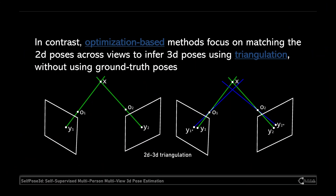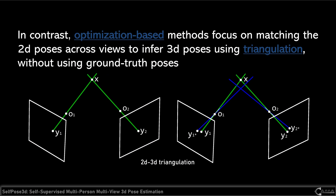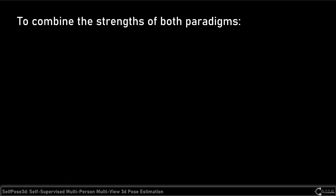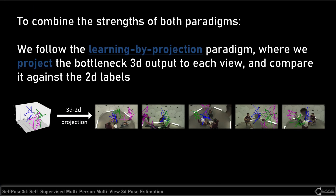In contrast, optimization-based methods focus on matching the 2D poses across views to infer 3D poses using 2D-3D triangulation. They do not rely on ground truth data, but their performance is relatively lower. To combine the advantages of both learning-based and optimization-based paradigms, we propose our method: Self-Pose 3D.